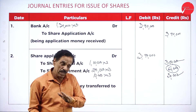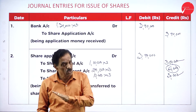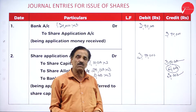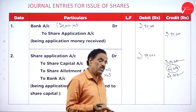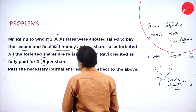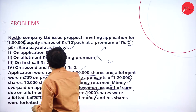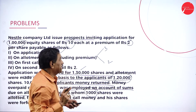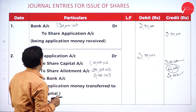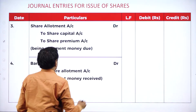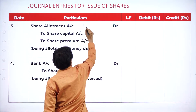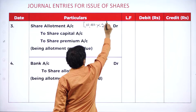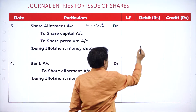Share application account debit to share capital account, to share allotment account, to share first account. For allotment entry: allotment money is 5 rupees including premium of 2, real money 3, for 1 lakh shares. Share allotment account debit — 1 lakh into 5 = 5 lakh required.